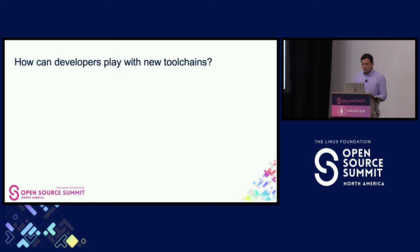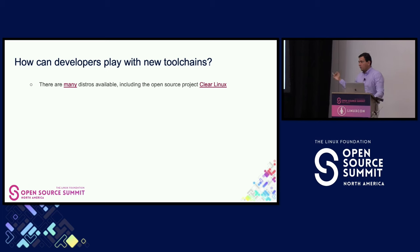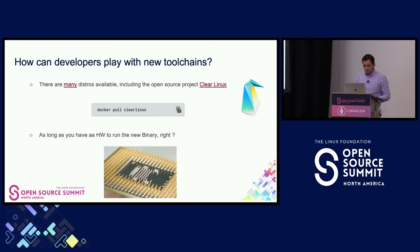How can developers play with these new toolchains? Many distros are available — Clear Linux, Fedora 40, which I tested yesterday and it's amazing. You can do a simple Docker pull for that, as long as you have the hardware. But we have a problem as a community: how do I get access to the hardware to test my kernel, my library, my application?